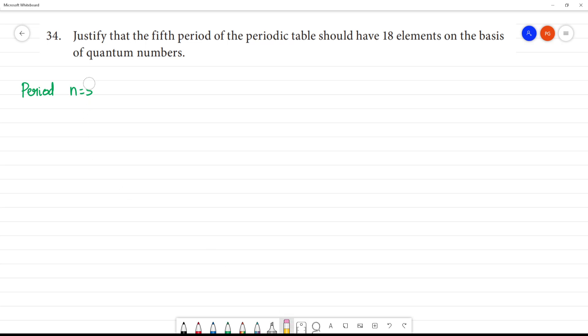n is equal to 1 is first period, n is equal to 2 is second period, 3rd is 3rd period. And n is what? Principal quantum number.